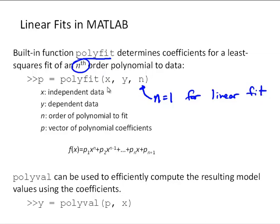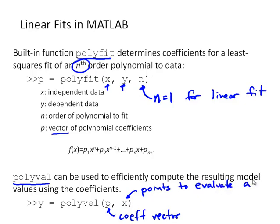We would input the x as the independent data, y would be the dependent data, n, again, is the order of the fit, and the output is a vector of polynomial coefficients, and this vector behaves similar to the vectors for defining polynomials that we looked at earlier with the roots function. And you can use the polyval function to directly evaluate the predicted data points from your model. P would be your coefficient vector, and x would be the points you want to evaluate it at. And that can be a vector of x values.